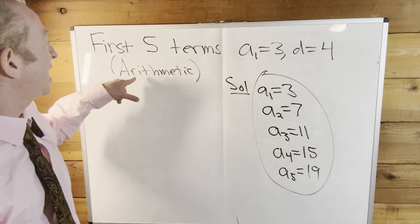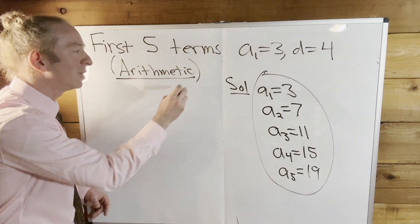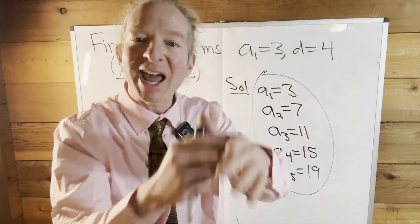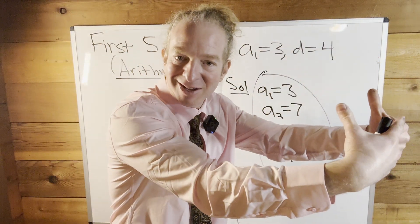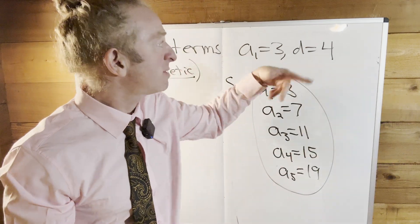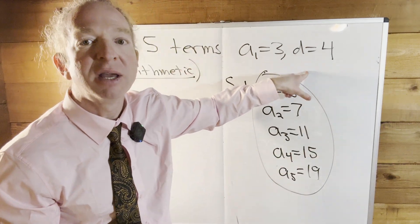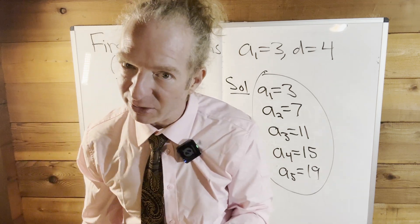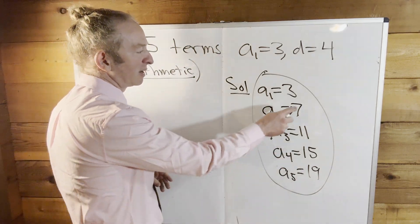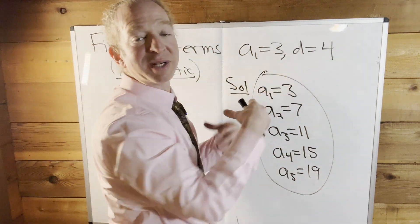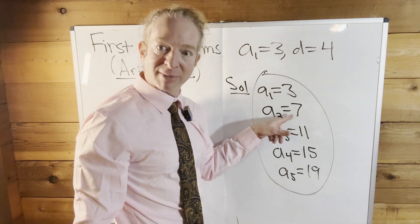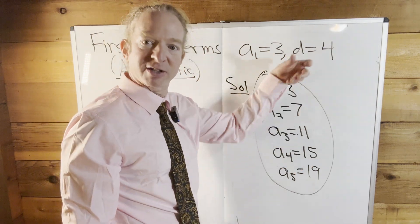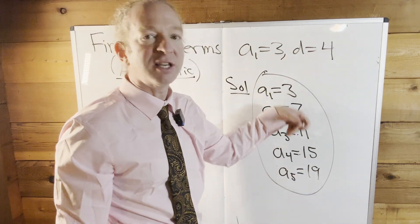And you can do that because it's arithmetic. What is an arithmetic sequence? It's a sequence where each term is obtained by adding a fixed constant to the previous — the same number every time. It's called the common difference because look at this: seven minus three is four, 11 minus seven is four, 15 minus 11 is four, 19 minus 15 is four. That's why it's called the common difference.